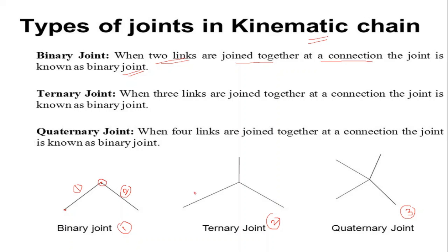For a ternary joint, three links are joined together at a connection — link one, link two, and link three — and this is called a ternary joint. For a quaternary joint, four links — link one, link two, link three, and link four — are joined together at a connection, and this is called a quaternary joint.